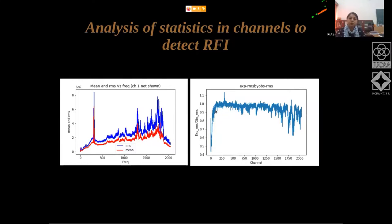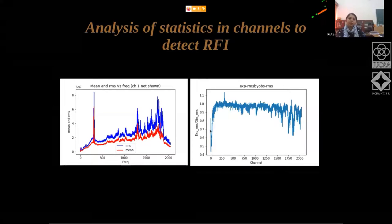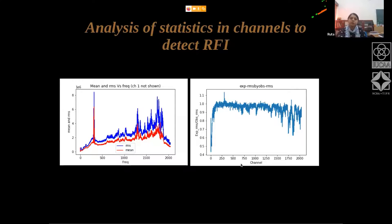I have jumped a little in order here. This is actually plotting the expected RMS divided by the observed RMS. Since we know the bandwidth of every channel — the full 200 MHz divided by the number of channels — if you have done a 4096-point Fourier transform, you will get 2048 channels. The channel resolution will be 200 MHz divided by 2048.